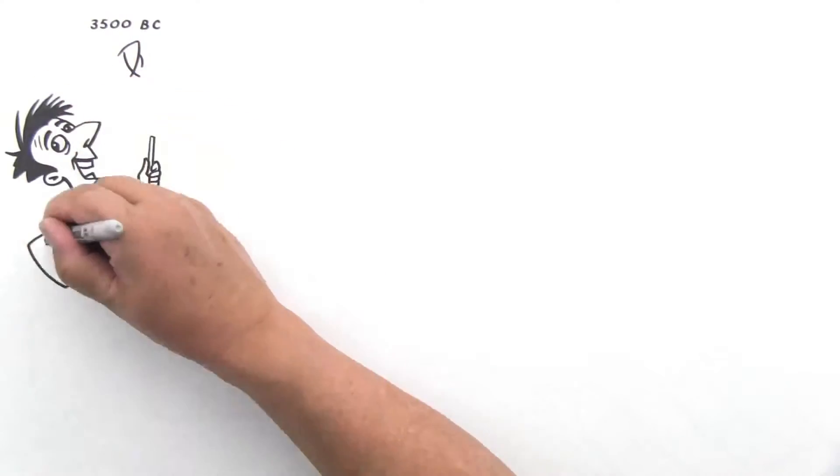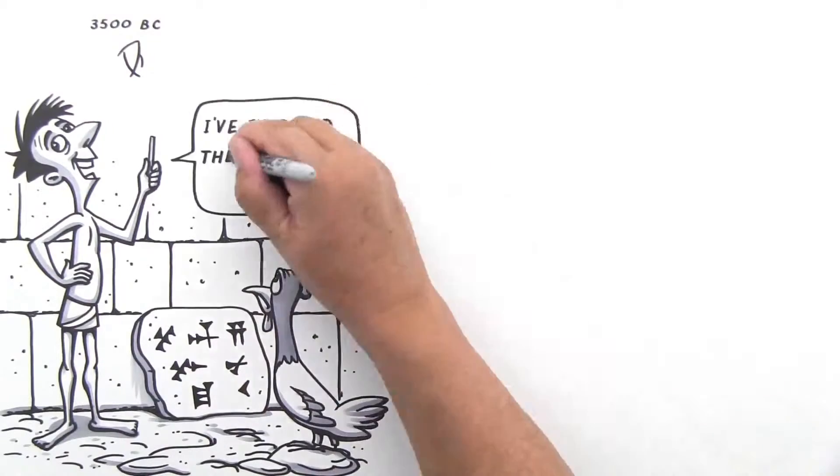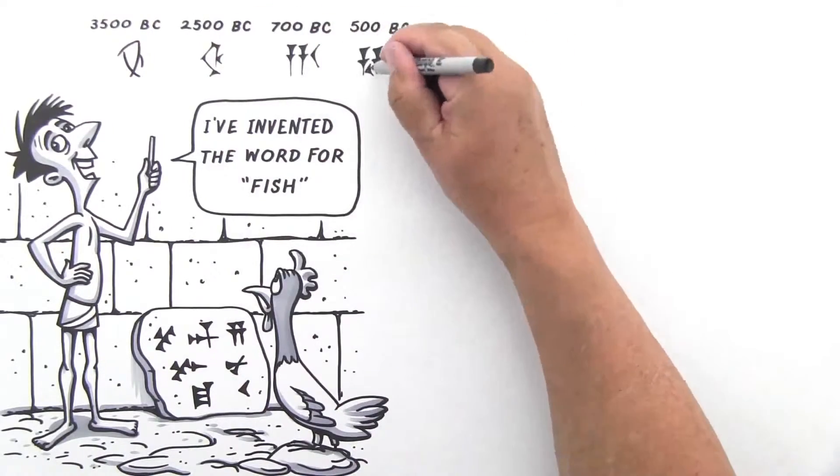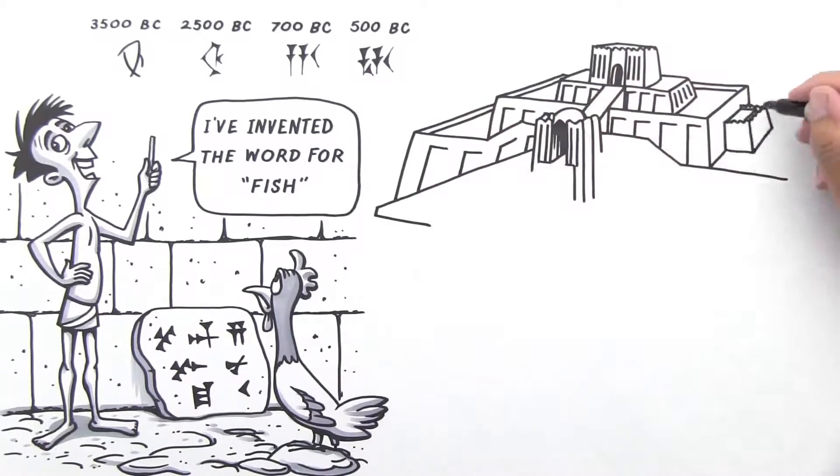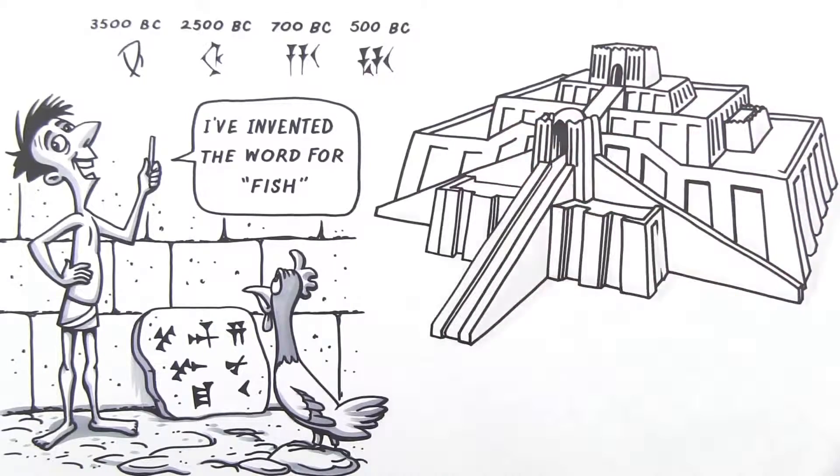In Mesopotamia, they invented the first written language called cuneiform. They started with pictographs, but over time, the writing evolved into more abstract symbols. They also got to invent cool names for their buildings, like ziggurat. In Ur, they built a massive ziggurat to pay homage to the gods.